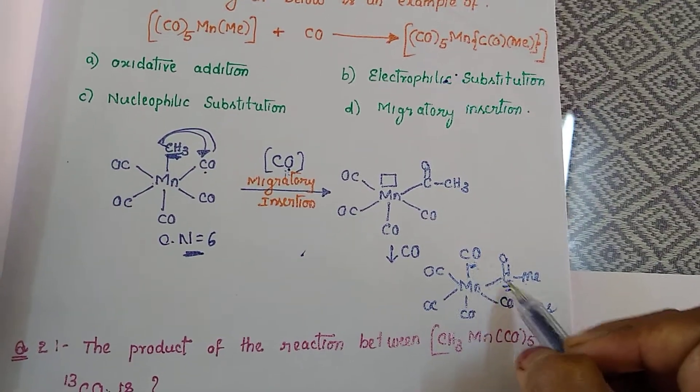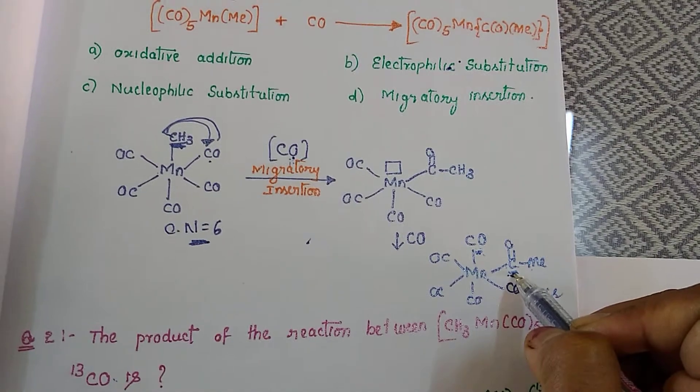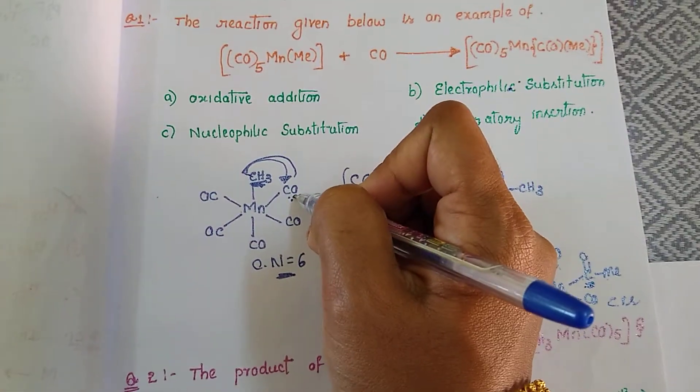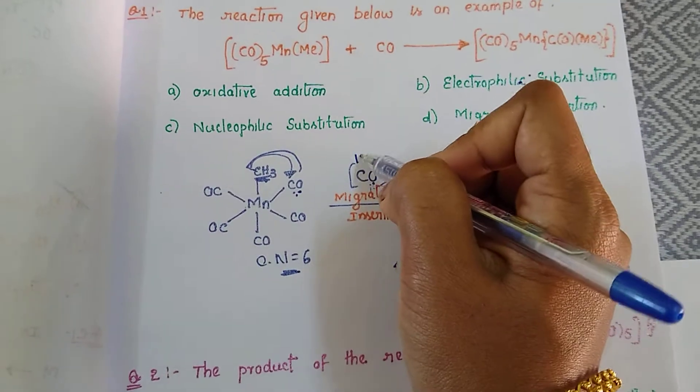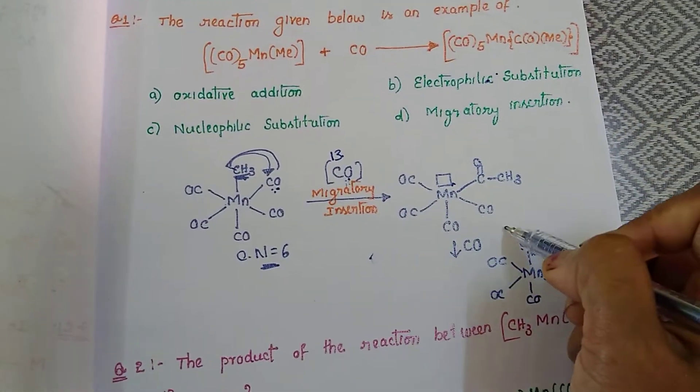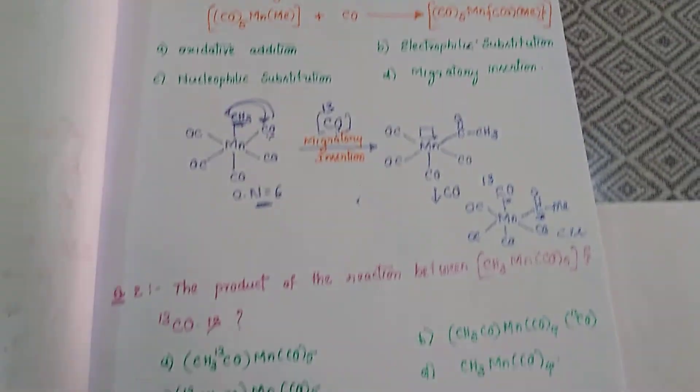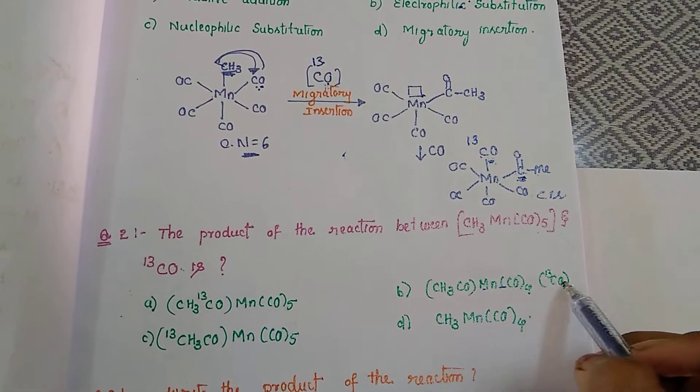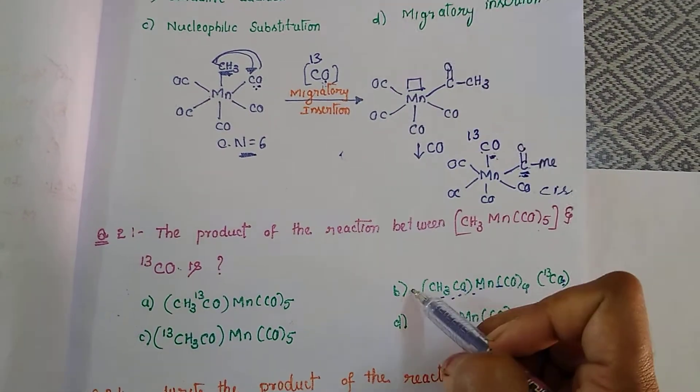Whether this one or this one - this is undergoing migration, this is undergoing insertion. Migration is occurring - the already existing CO only is undergoing migration. The incoming new CO is coming and attacking at the vacant site. So the incoming new CO is the labeled one, so that is C13.